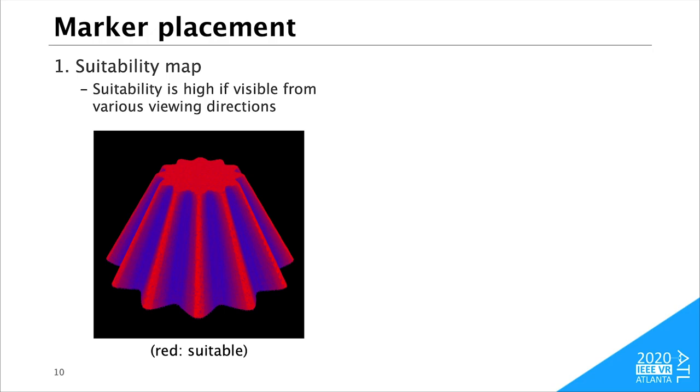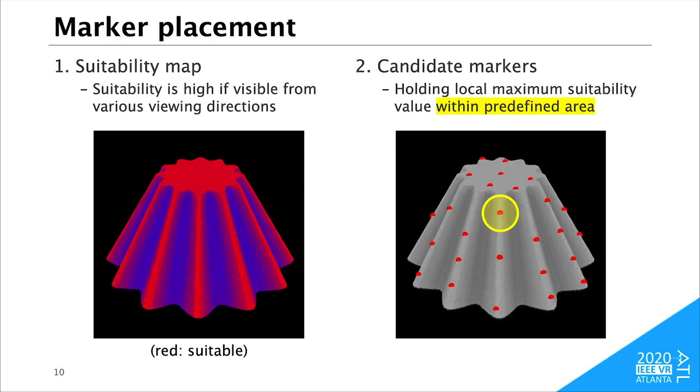Markers' locations significantly affect the pose estimation performance, so they need to be carefully determined. At first, we compute the suitability map for the marker locations based on the visibility from various viewing directions. Then we select points on the surface as candidate markers. The candidate markers' places hold local maximum suitability values within a predefined area. We need the restriction of the predefined area because the fiber has a certain amount of internal volume. The distance between two markers on the surface should be large enough to avoid collision of fibers.